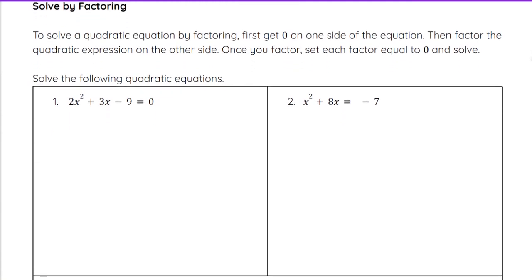To solve a quadratic by factoring, we have to make sure that we have zero on one side of the equation first. So first we have to get that zero on one side, and then we can factor. Then once we factor, we set each factor equal to zero and solve, and that's how we get our answers.